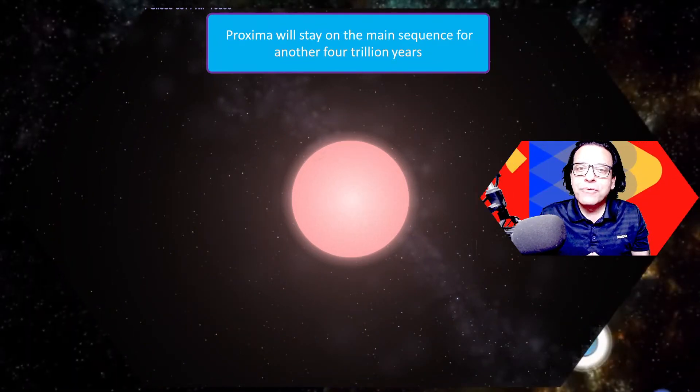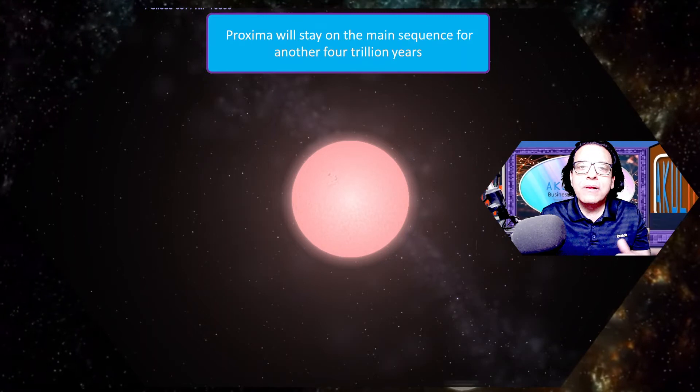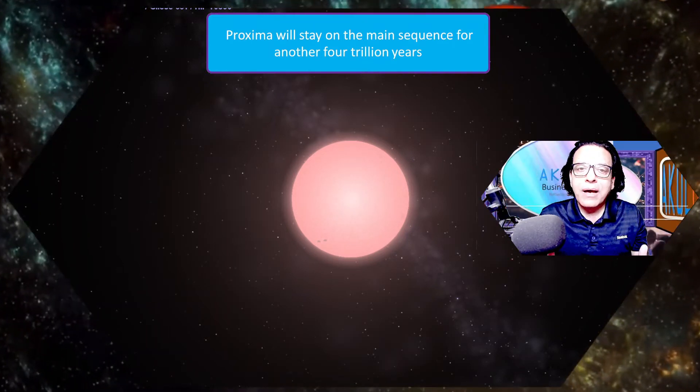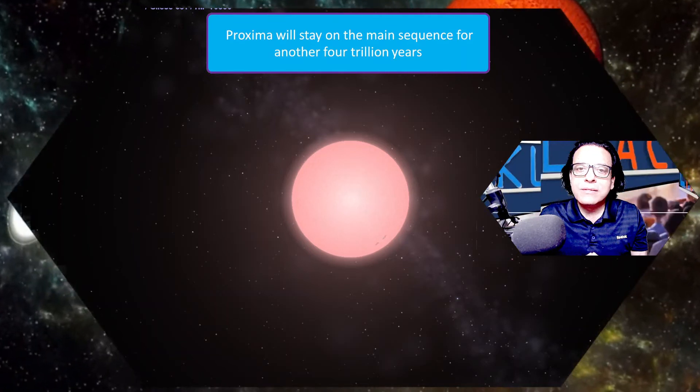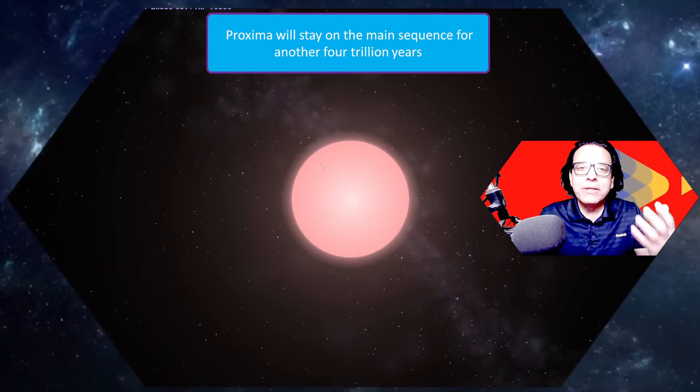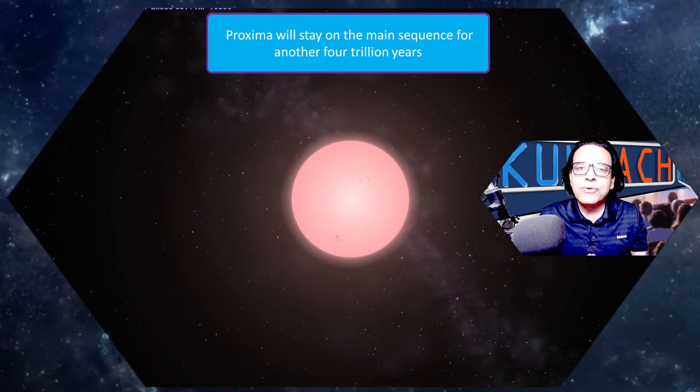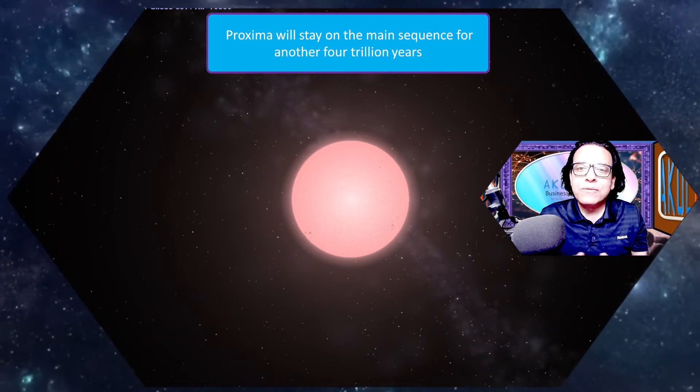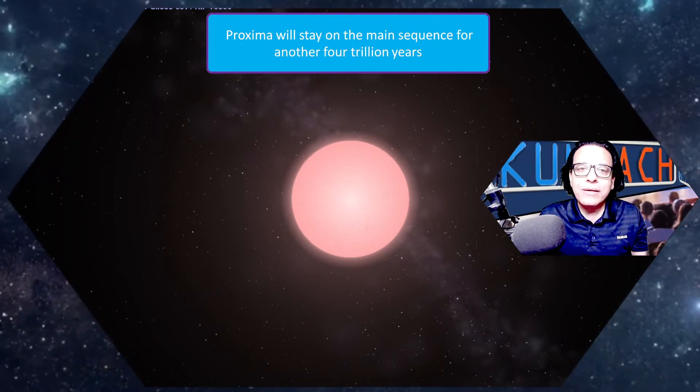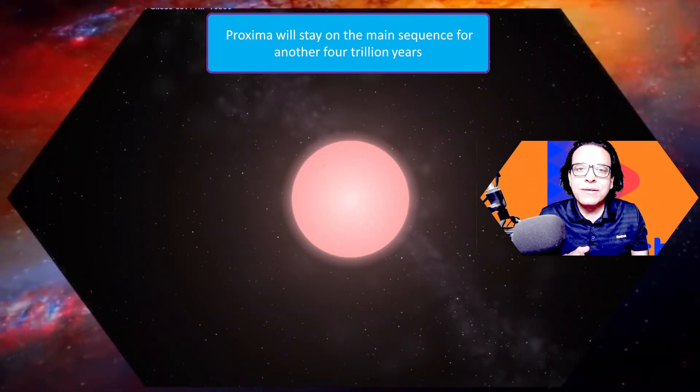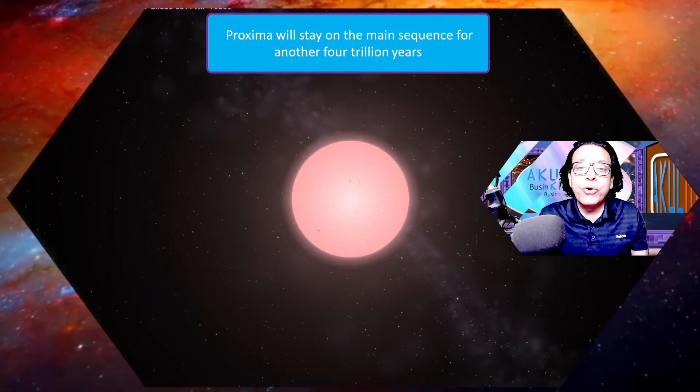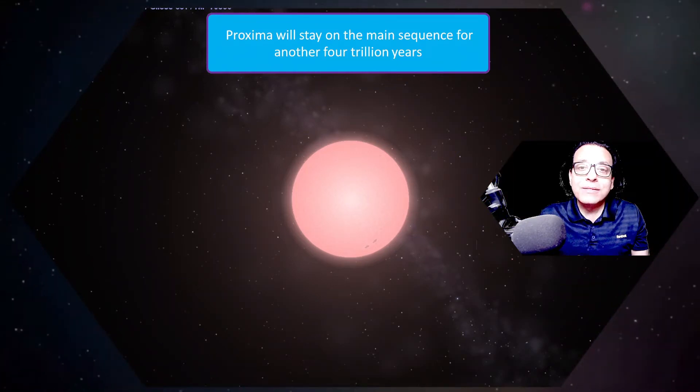Most of the red dwarf stars in our universe, including Proxima Centauri, will have a very long life. From that perspective, our universe is also in its infancy. The universe is only 13.5 billion years old, so it has a long way to go. As time passes, only the red dwarfs and black holes will exist in our universe after a few trillion years.